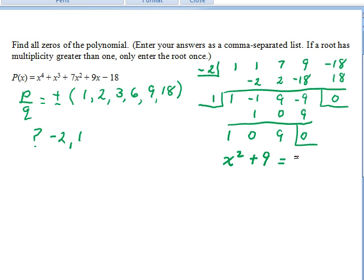We know that if we set this equal to 0, we're going to get x equals plus or minus the square root of negative 9,